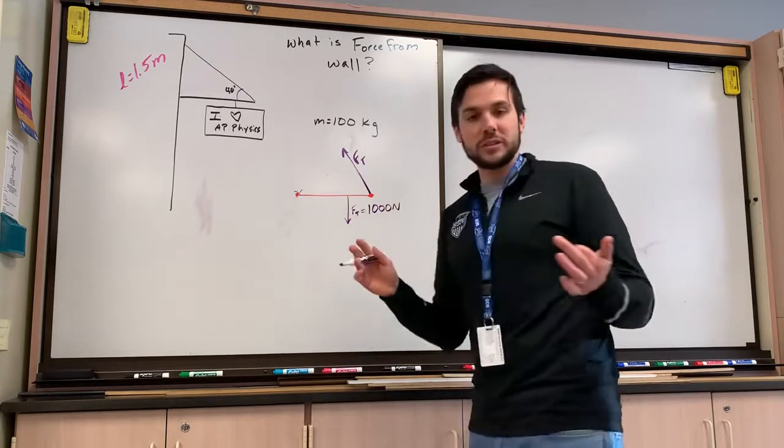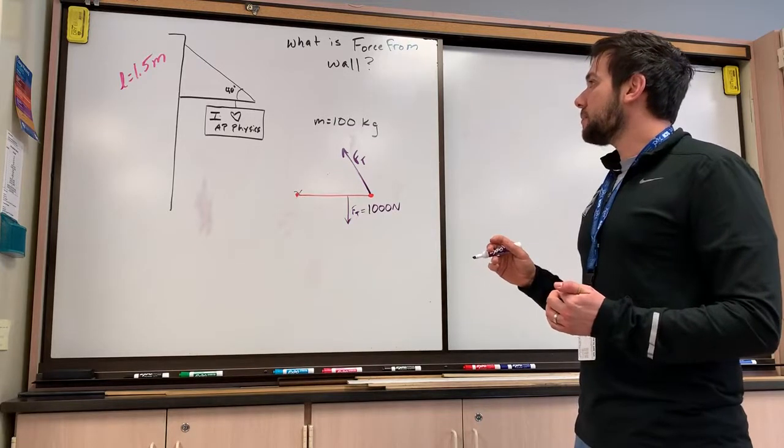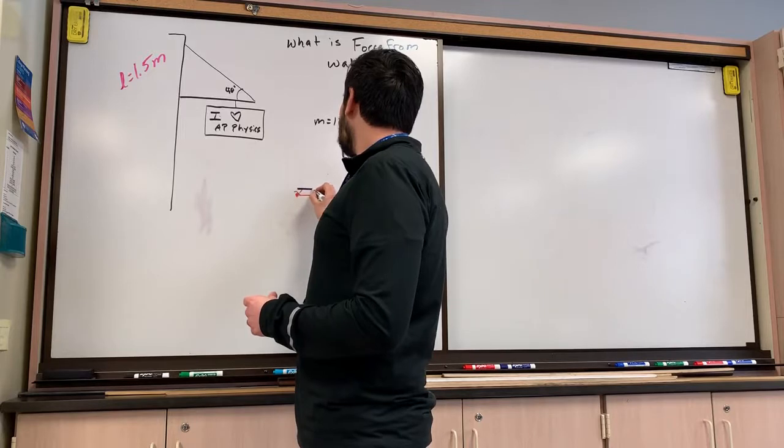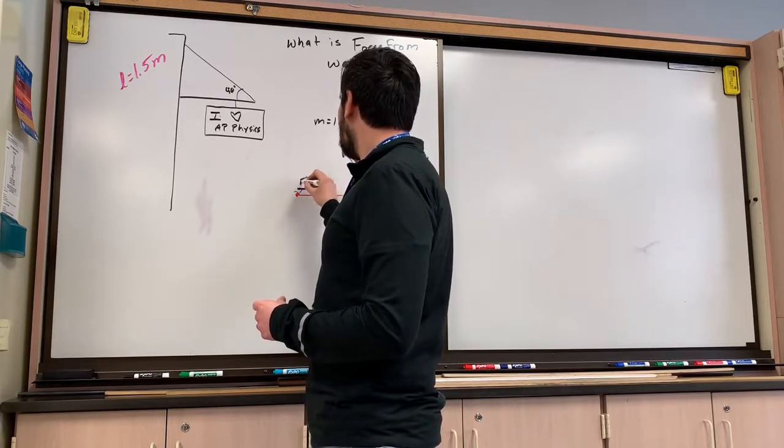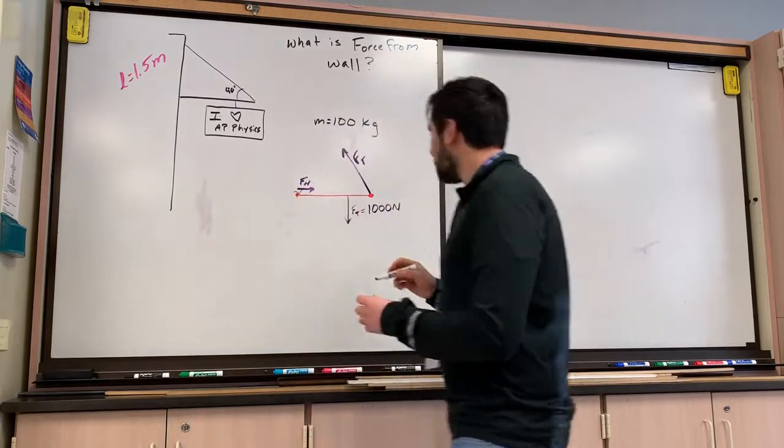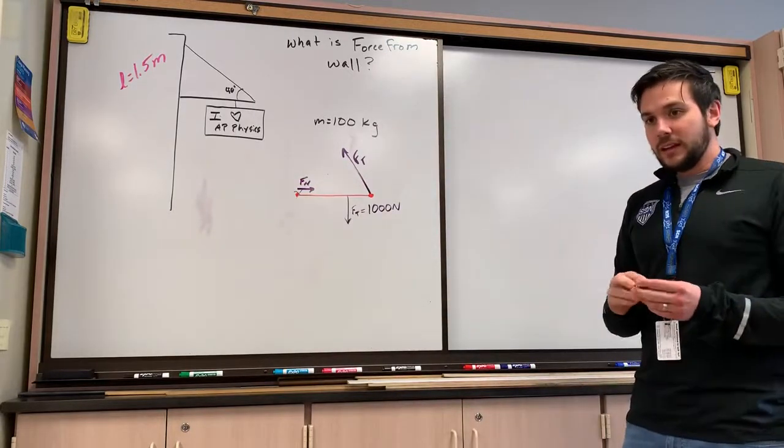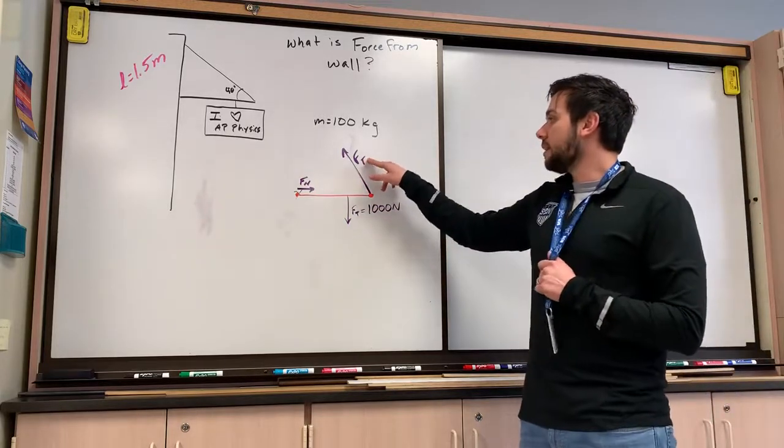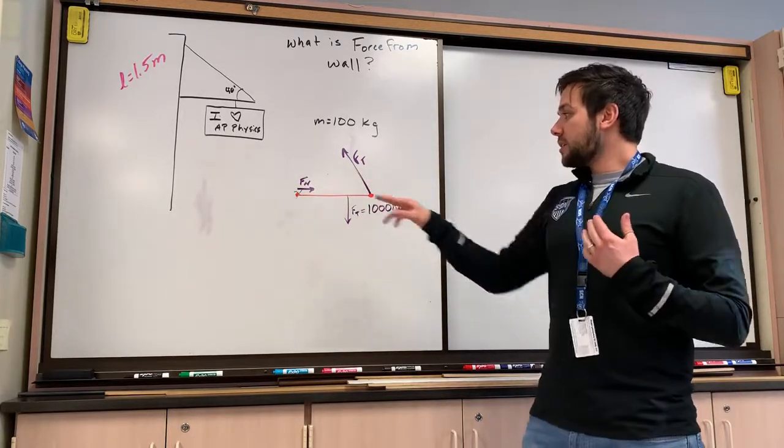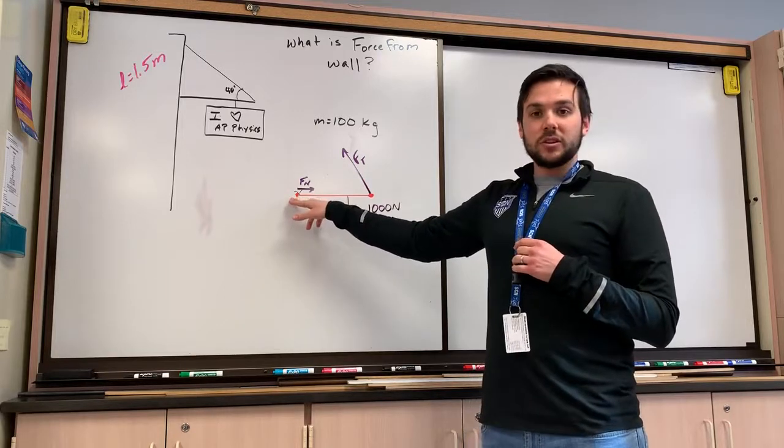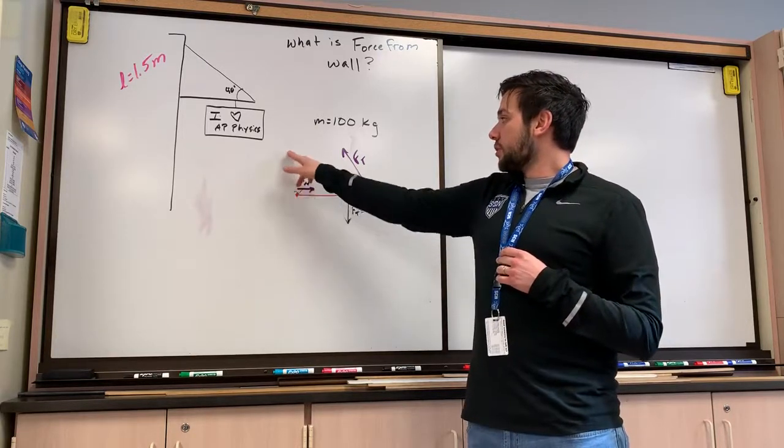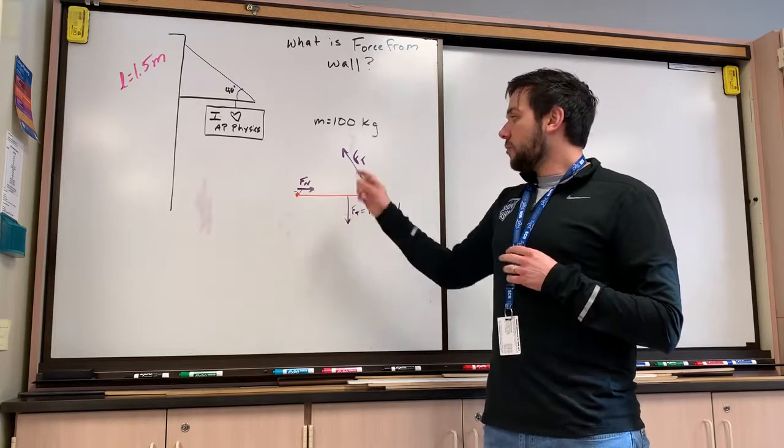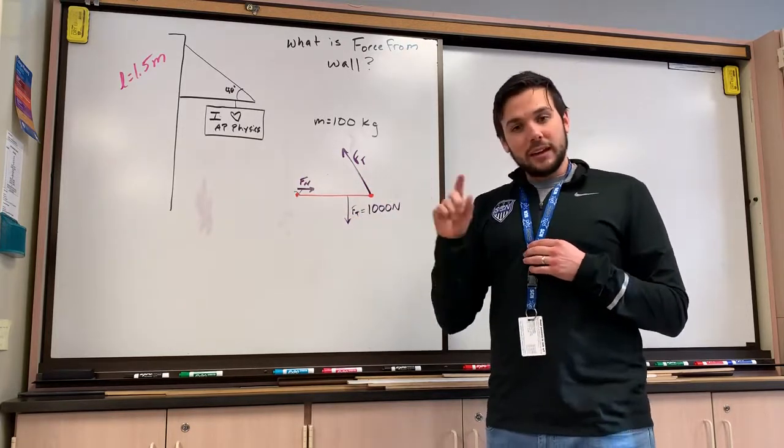Now, what other forces are at play? Well, we also know that there is a normal force exerted from the wall here. Since there is a string holding this up or tying it up, we're going to assume that this wall is frictionless. And so we're not going to have a force of friction that is also maybe preventing this bar from being held down. And we'll see why we can do that in a moment.